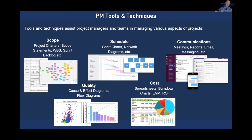For quality — managing the quality of outputs for a project — there are a lot of interesting tools available for detecting errors or issues in manufacturing or in the production of software or data. For example, we often use flow diagrams extensively in our work to figure out how systems need to be designed or data pipelines need to be put together. So these are tools that help us manage quality in our projects.